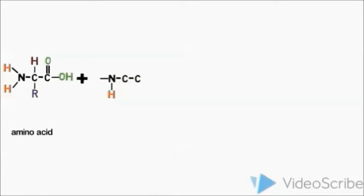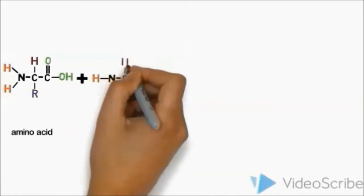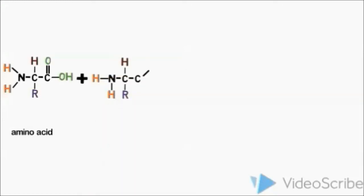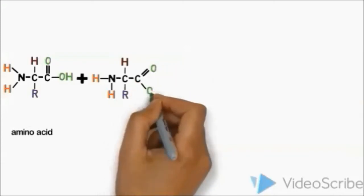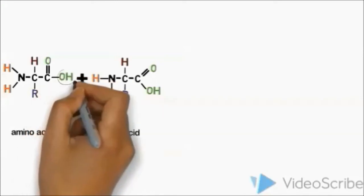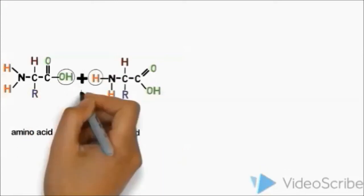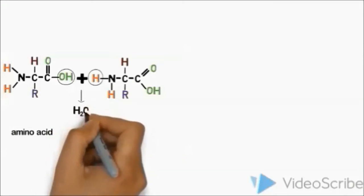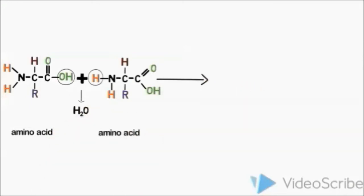The reaction occurs between two functional groups of amino acid. First, carboxyl group of one amino acid and amino group of another amino acid. During condensation process, OH is taken from carboxyl group of one amino acid and H is taken from amino group of another amino acid.